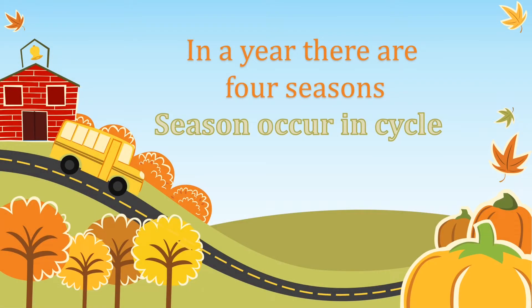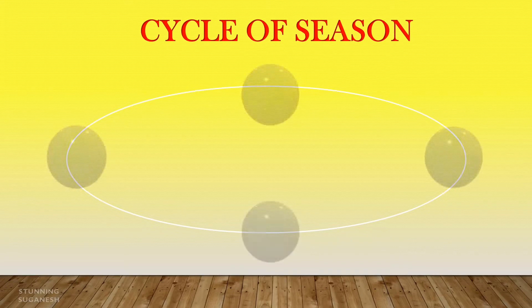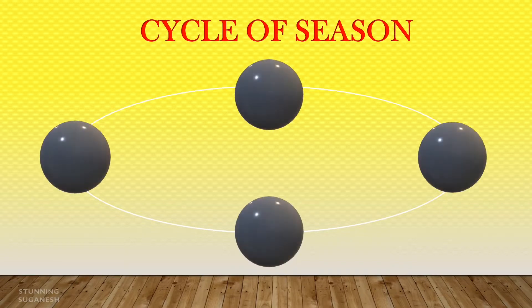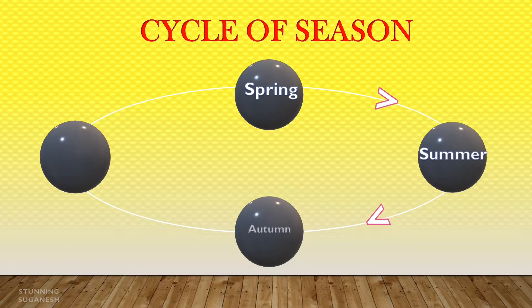There are four seasons in a year. Seasons occur in a cycle: Spring, Summer, Autumn, Winter, and again Spring.